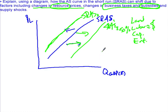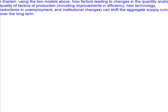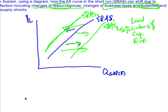The third determinant is supply shocks. If we have a drought and a large part of our crops are destroyed, that shifts the curve left. If we had the best growing season ever, it would shift it right. Just keep in mind: if it costs businesses money, shift the short run aggregate supply curve to the left; if it saves them money, it shifts to the right. We'll stop here and in the next video we'll look at everything else.